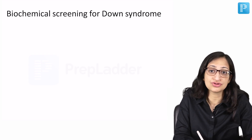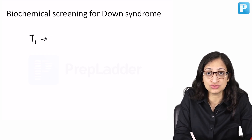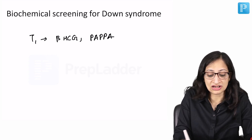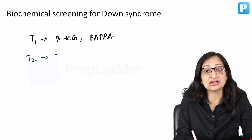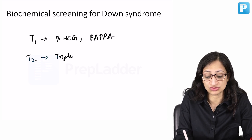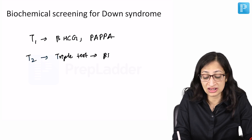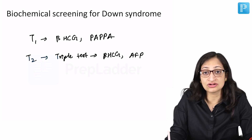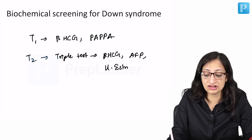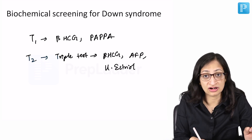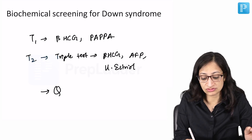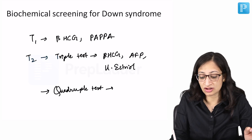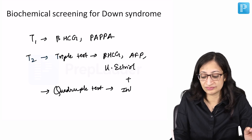For biochemical screening, in the first trimester you use markers like Beta HCG and PAPP-A. In the second trimester, there is the triple test and the quadruple test. The triple test includes Beta HCG, alpha-fetoprotein, and unconjugated estriol — done using mother's blood. The quadruple test has all three markers of the triple test plus an additional marker known as inhibin.